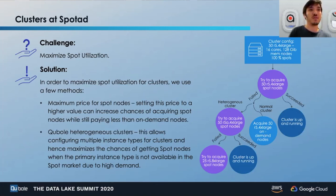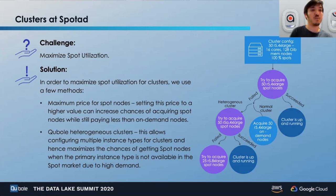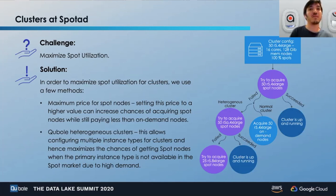To maintain the same performance using different instance types, we have the weighting parameter, which configures the weight for each instance type relative to the primary. For example, our cluster is configured for 50 R5.4XL spot nodes, but at the third fallback step we try to acquire only 25 R5.8XL spot nodes, because R5.8XL nodes are two times larger — so a weight of two is configured. This means we acquire only 25 to maintain the same performance. If all spot acquiring methods fail, there is always the fallback-to-on-demand feature to acquire on-demand nodes.